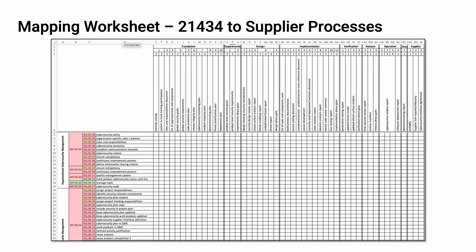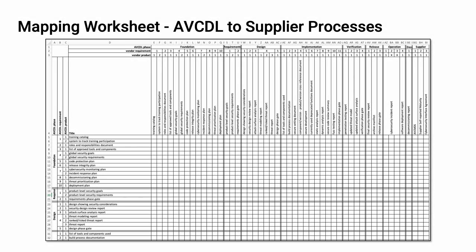Next, the supplier will take the 434 REC to Vendor Process Sheet of the Vendor Process to AVCDL Product Mapping Template Workbook and complete it, replacing the top rows listing the AVCDL materials divided into phases and phase requirements, with their own corresponding phases and processes, showing how those map onto the corresponding ISO 21434 requirements. Once the supplier has completed mapping their processes against ISO 21434, they'll return the workbook to the customer. The customer's cybersecurity SME will then take both the 434 to AVCDL and 434 to supplier mappings and bring them together in an AVCDL to supplier process mapping, with AVCDL processes on the left and supplier processes across the top, using ISO 21434 as a basis for alignment.